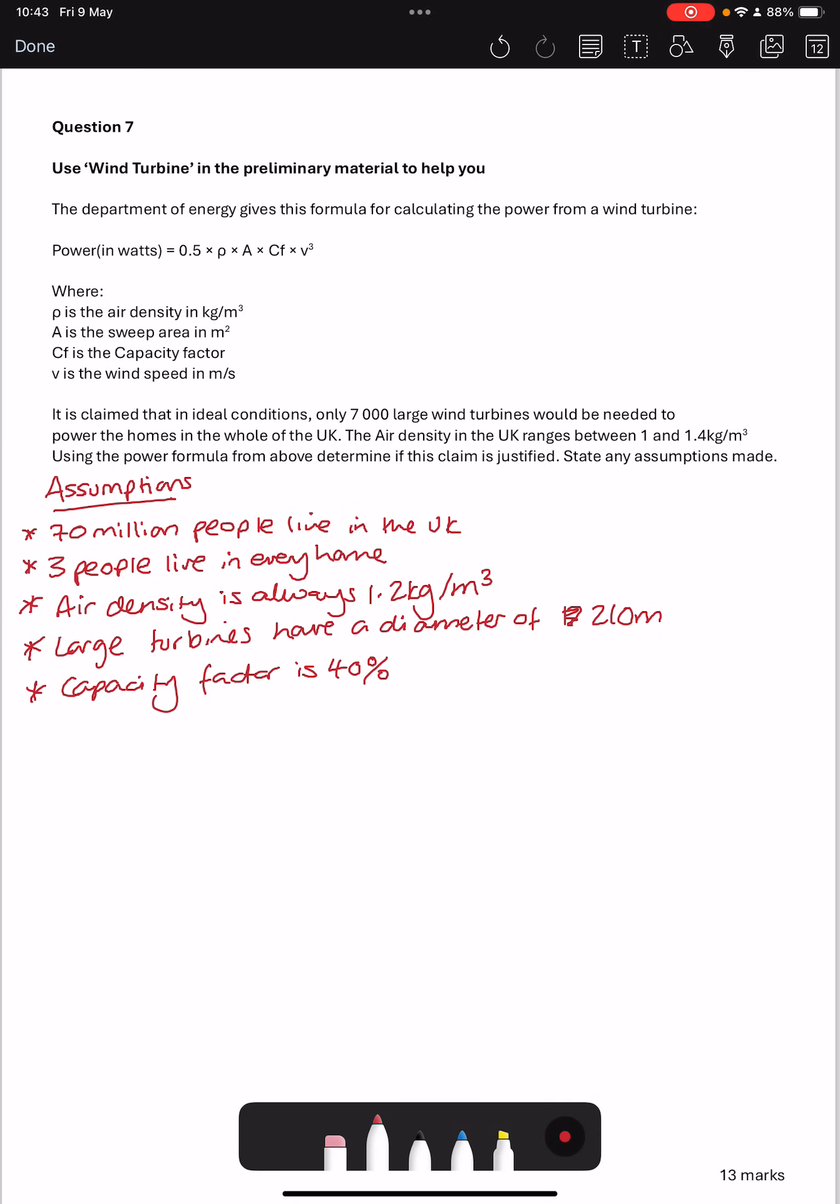Then the wind speed. In ideal conditions, we can see from our preliminary material that there is a range given, which is 3 and 25. So let's go bang in the middle and say wind speeds are always 14. Let's avoid decimals in ideal conditions.